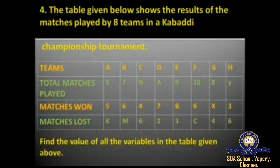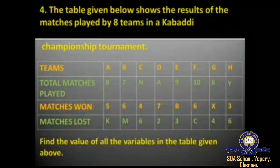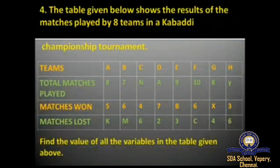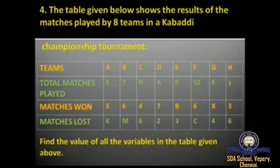For team C, they won four matches and lost six, so you find the total matches played. For team D, they won seven and lost two, so again find the total played. For team E, total played and matches lost are given, so find matches won. For team F, total played and matches won are given, so find matches lost. For team G, total played and matches lost are given, so find matches won. For team H, matches won and lost are given, so find total played.